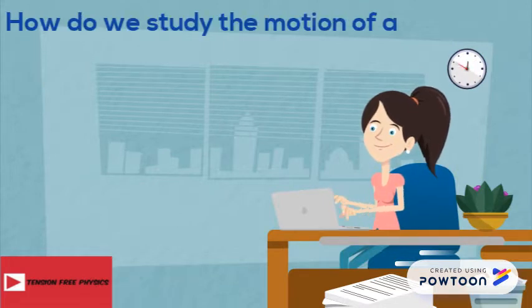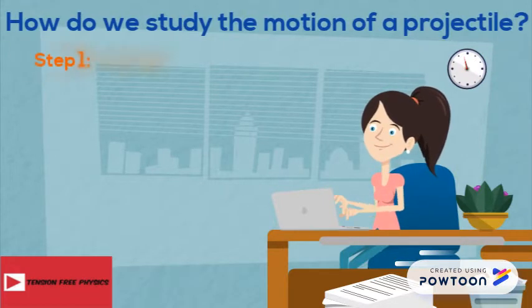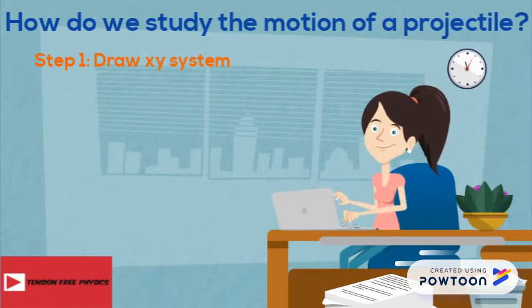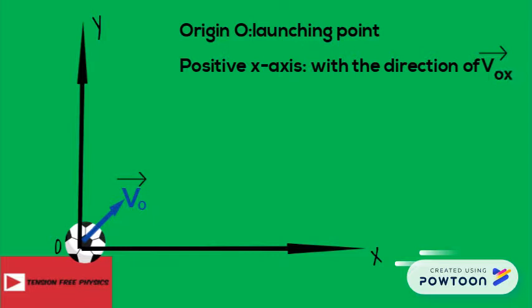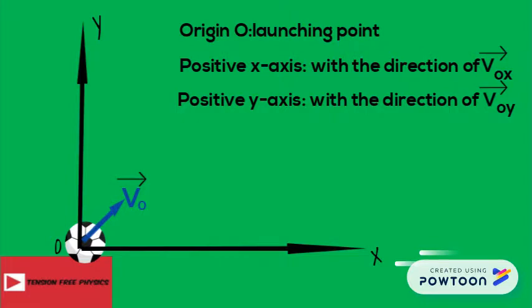To study the motion of a projectile, consider the following steps. First, draw the XY system. The ball is given an initial velocity v0 that makes an angle alpha with the horizontal. Let the origin of the Cartesian system be the launching point of the projectile. Then draw the x-axis and the y-axis such that the positive x-axis is with the direction of v0x and the positive y-axis is with the direction of v0y.